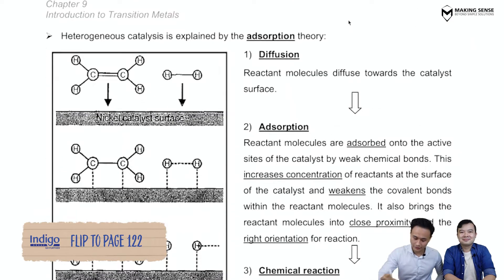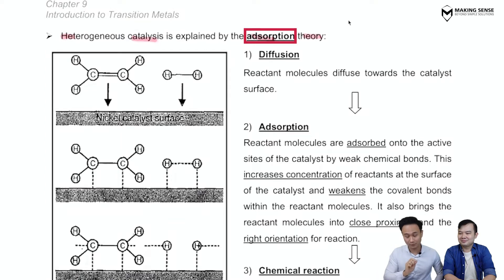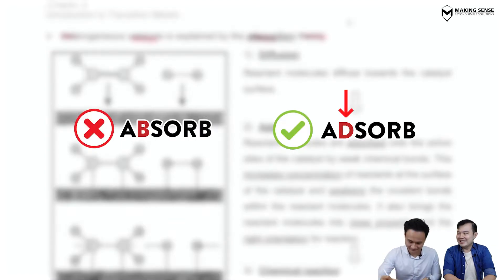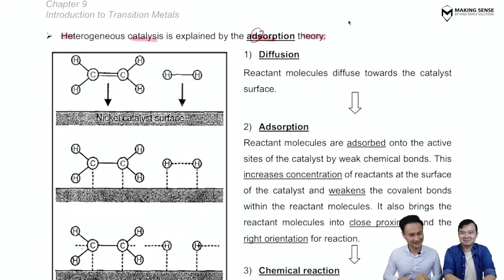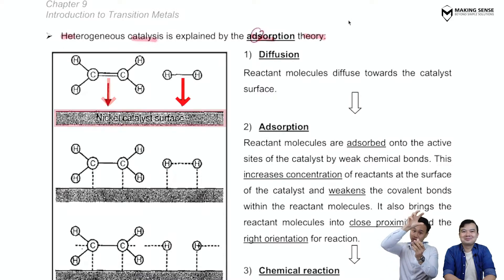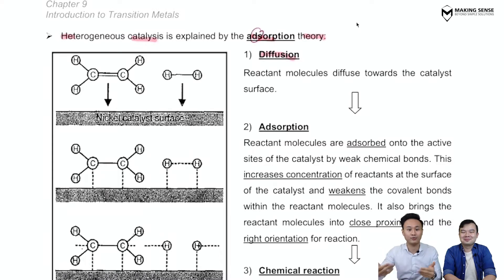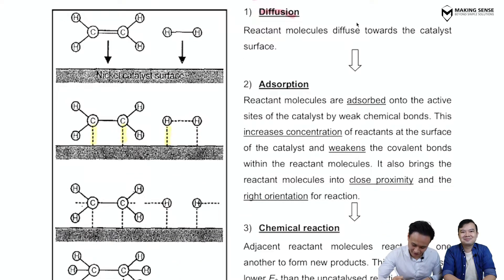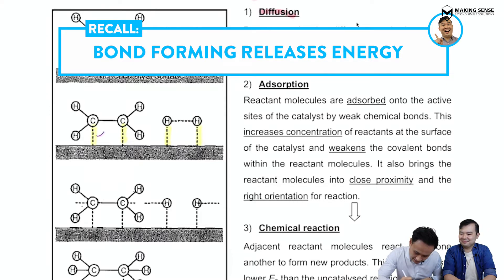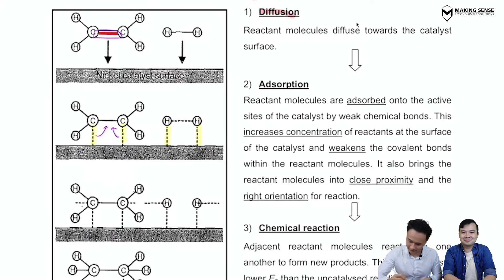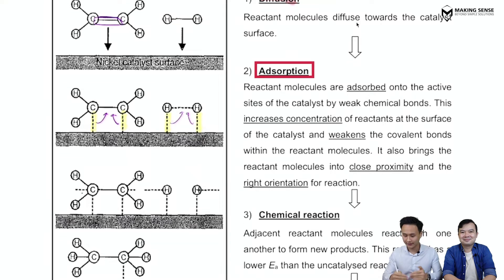Heterogeneous catalysis is based on the adsorption theory — adsorb with a 'd', not absorb. The mechanism begins with a piece of nickel catalyst onto which reactant particles diffuse. When you sit onto it, you form bonds with the metal, and forming bonds releases energy. This breaks the pi bond and sigma bond of the reactant, a process called adsorption.